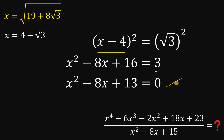Take a look at the denominator of the expression: we have x squared minus 8x plus 15. We already have x squared minus 8x plus 13 equals 0. So if we add 2 on both sides, we get the value of x squared minus 8x plus 15, which equals 2.